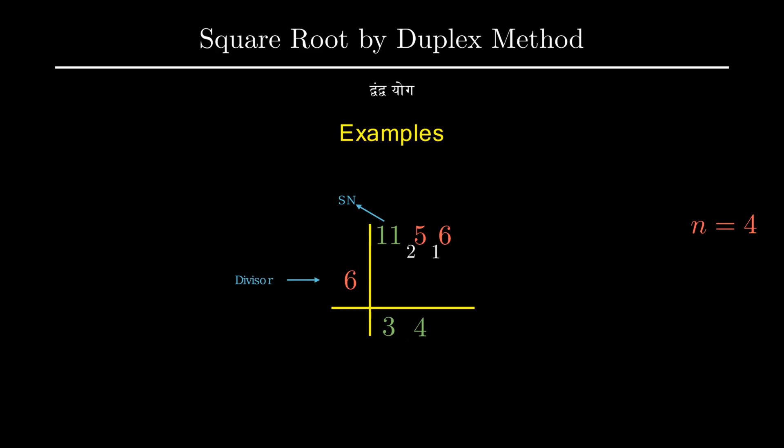For the next step we will find duplex of the previous digit of our final answer which is 4. Duplex of 4 will be 4 square which is 16. We will then subtract this from our latest starting number which is 16. On subtracting we will get 0 and on dividing 0 by 6 we will get our answer as 0.